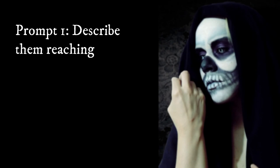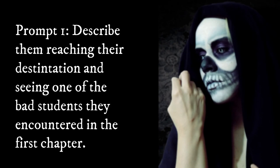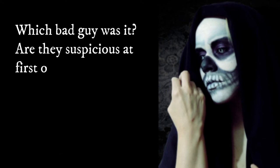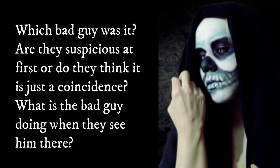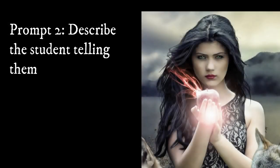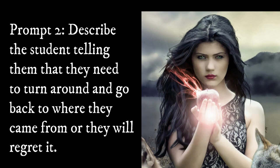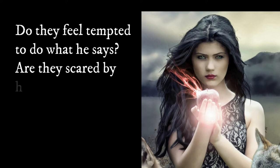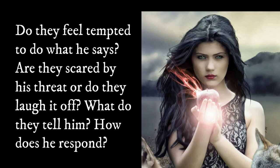Prompt 1: Describe them reaching their destination and seeing one of the bad students they encountered in the first chapter. Which bad guy was it? Are they suspicious at first, or do they think it is just a coincidence? What is the bad guy doing when they see him there? Prompt 2: Describe the student telling them that they need to turn around and go back to where they came from, or they will regret it. Do they feel tempted to do what he says? Are they scared by his threat, or do they laugh it off? What do they tell him? How does he respond?